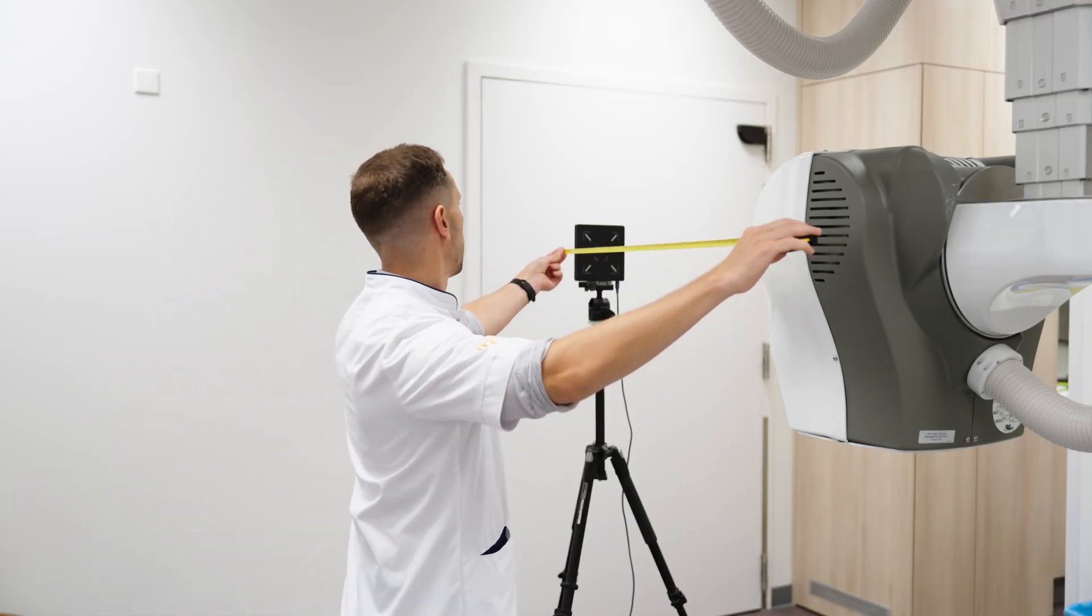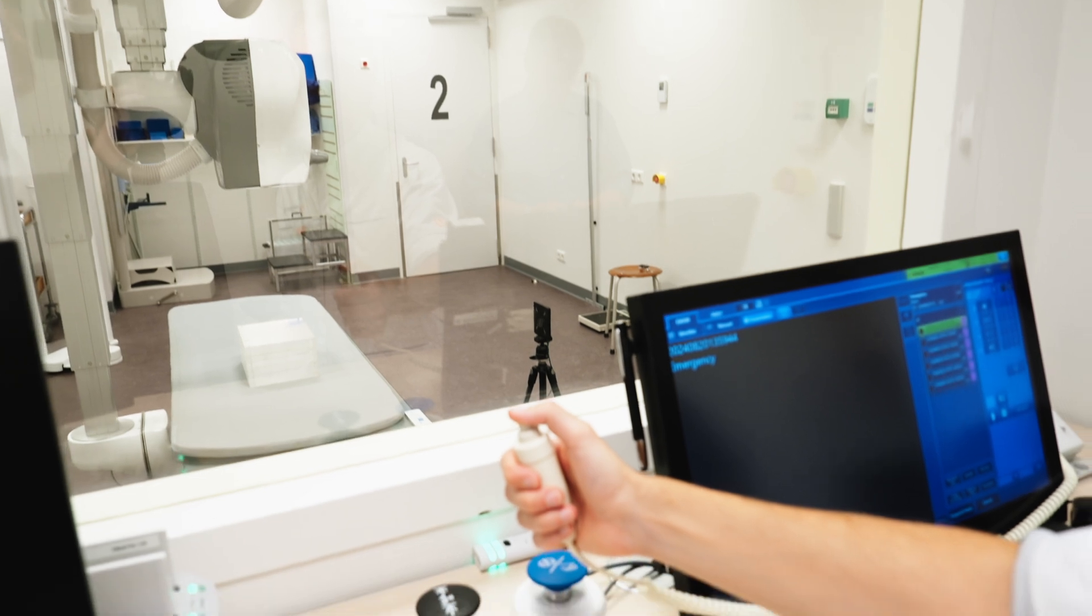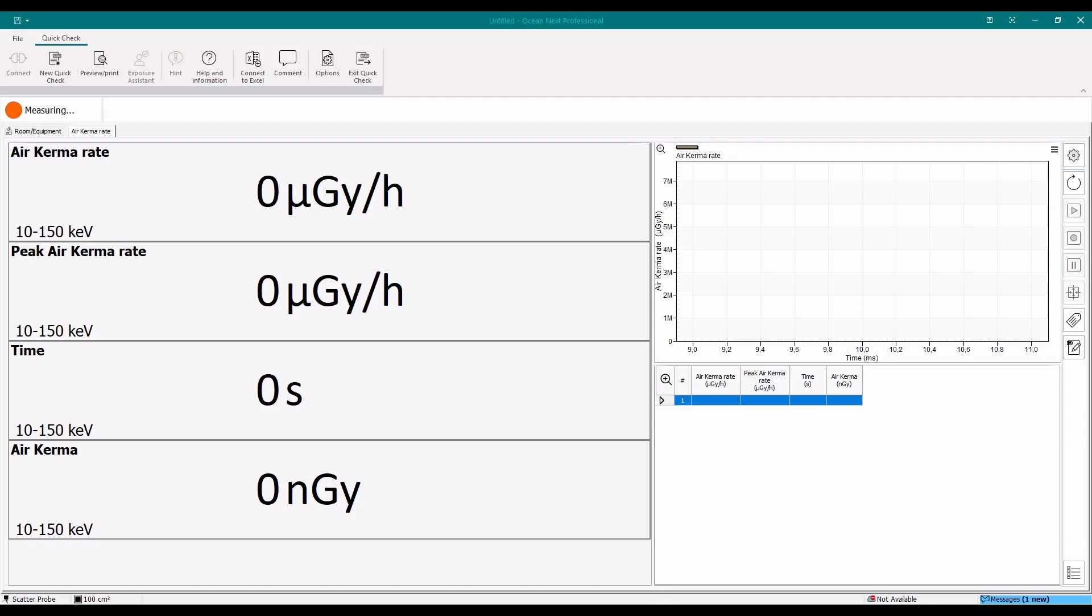The scatter probe can be set up at one meter from the x-ray source focal spot. Make an x-ray exposure. The x-ray system should be configured to the highest clinically available setting.